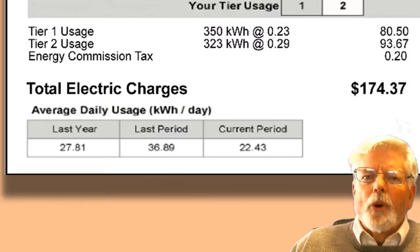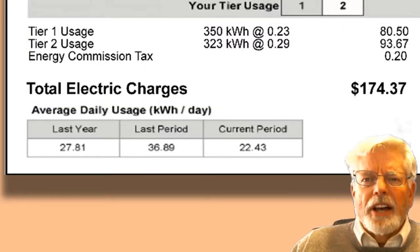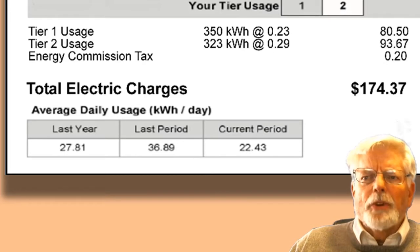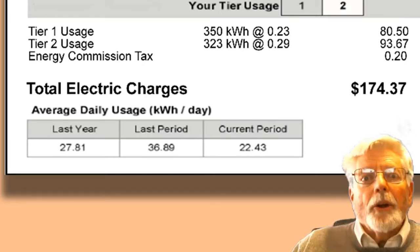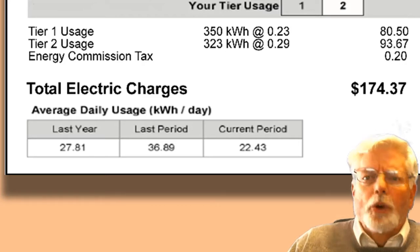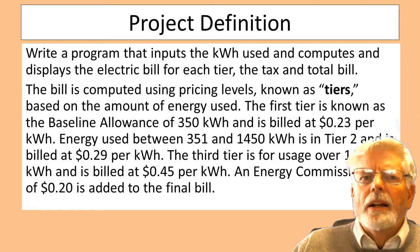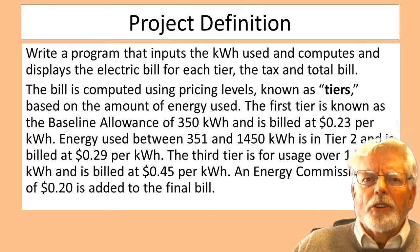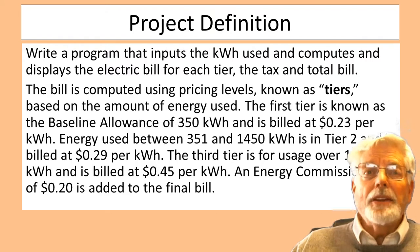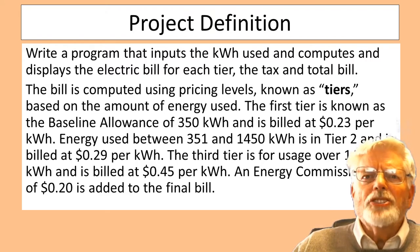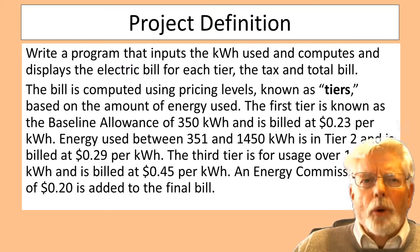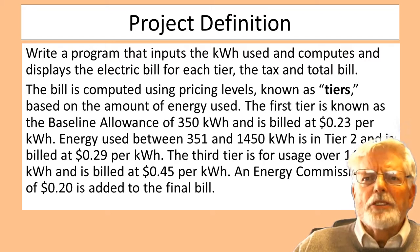The total is computed by adding the tier 1 bill plus the tier 2 bill and an additional energy commission tax of $0.20, for a total of $174.37. These billing rates are only examples for this exercise. There are different rates for the winter and summer, and there are periodic rate increases, so don't use these values to compute your own bill. Here is the project definition: write a program that inputs the kilowatt hours used and computes and displays the electric bill for each tier, the tax, and total bill.